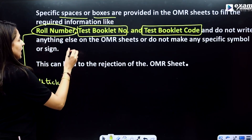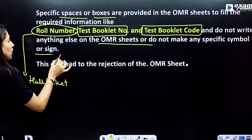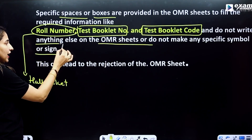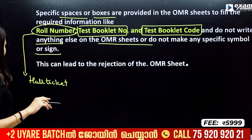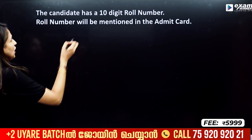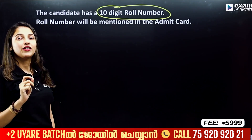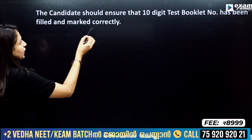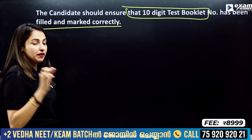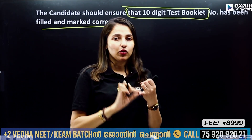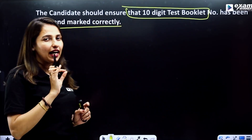If you have these three things, do not make any specific symbol or sign. If you have any specific sign or symbol or other marks, the paper will be rejected. The candidate must have a 10-digit roll number, and if you have a hall ticket, ensure that the test booklet number has been filled and marked correctly.